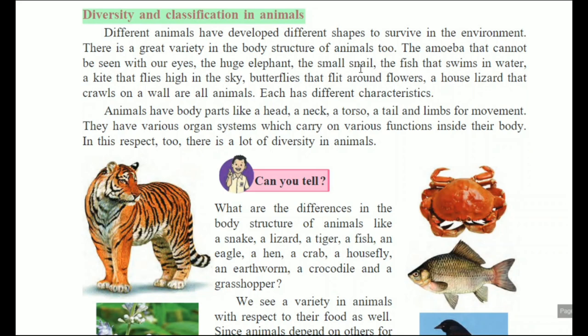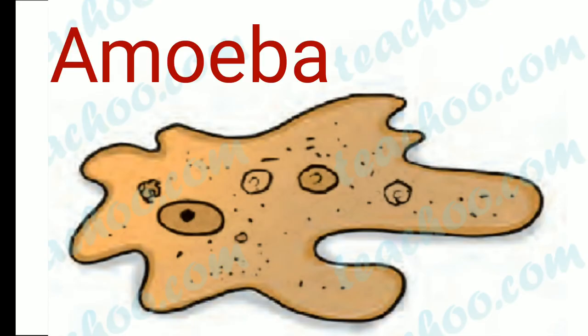The amoeba cannot be seen with our eyes; the huge elephant, the small snail, the fish that swims in water, a kite that flies high in the sky, butterflies that flit around flowers, a house lizard that crawls on a wall — all are animals. From the smallest amoeba, which is a unicellular organism, up to the huge elephant.